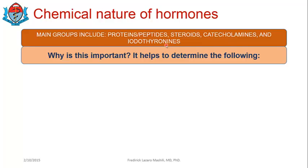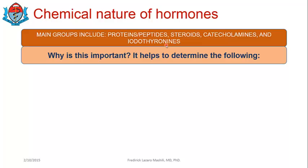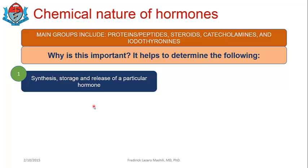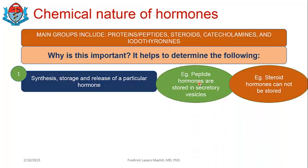Why is this important? Knowing the chemical nature of hormones is important because it helps determine the following. Number one, you can tell a lot about the synthesis, storage, and release of a particular hormone once you know its chemical structure. A good example is peptide hormones — insulin is a good example of a peptide hormone.